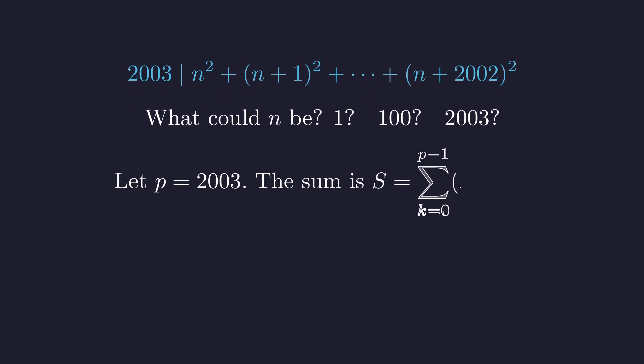With p equal to 2003, we can express our sum in compact sigma notation. We're summing from k equals 0 to p minus 1, giving us exactly p terms.